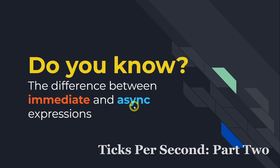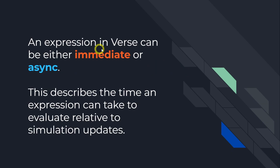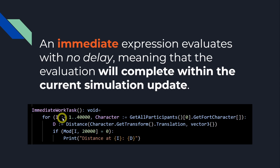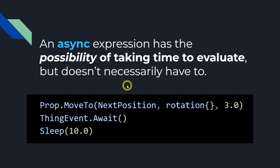First things first, let's talk about immediate and async expressions. An expression in Verse can either be immediate or asynchronous. This describes the time an expression can take to evaluate relative to simulation updates. An immediate expression evaluates with no delay, meaning that the evaluation will complete within the current simulation update. An async expression has the possibility of taking time to evaluate, but doesn't necessarily have to.